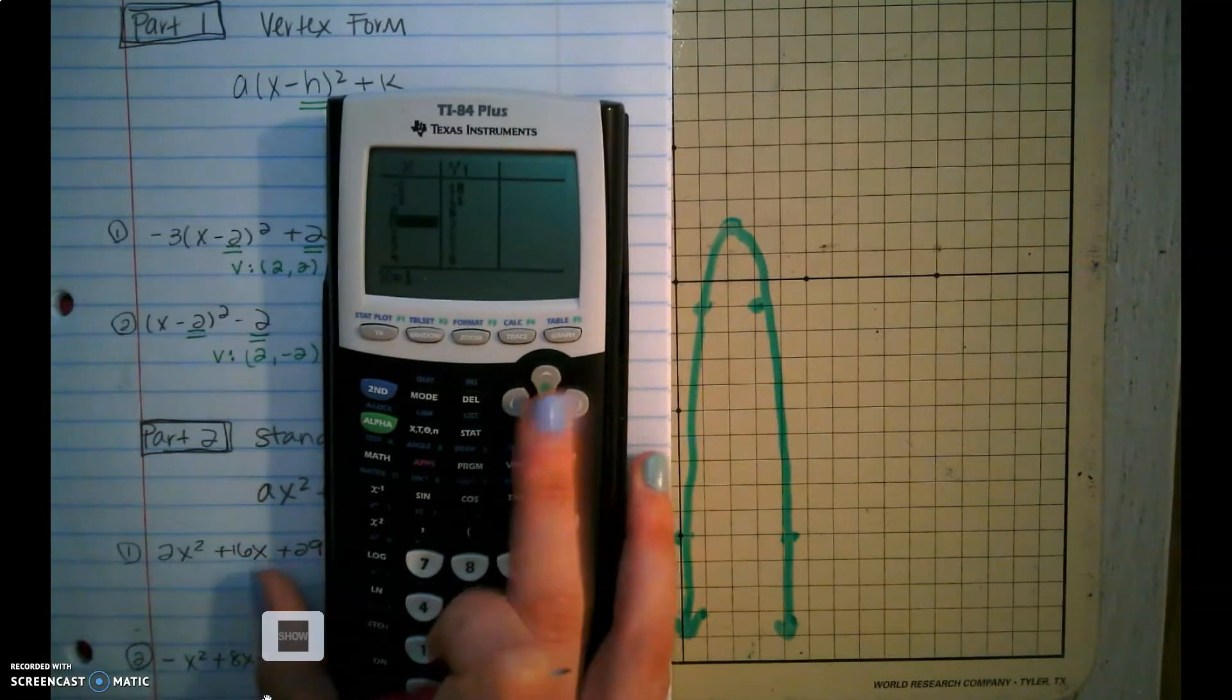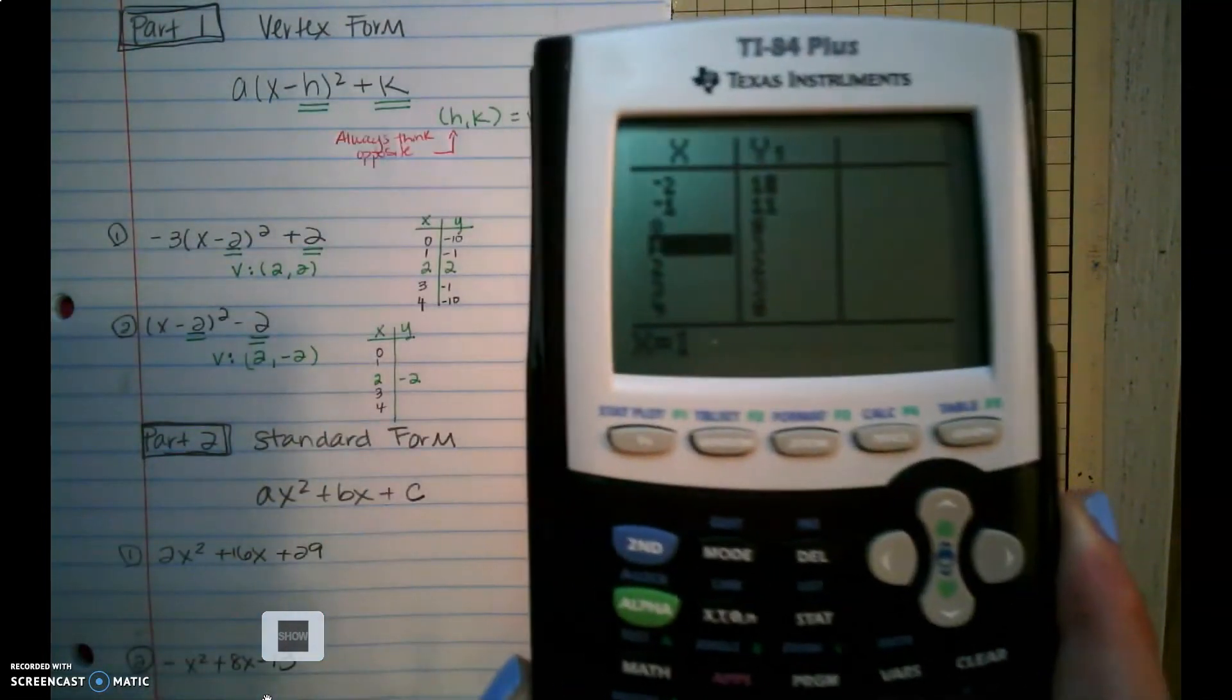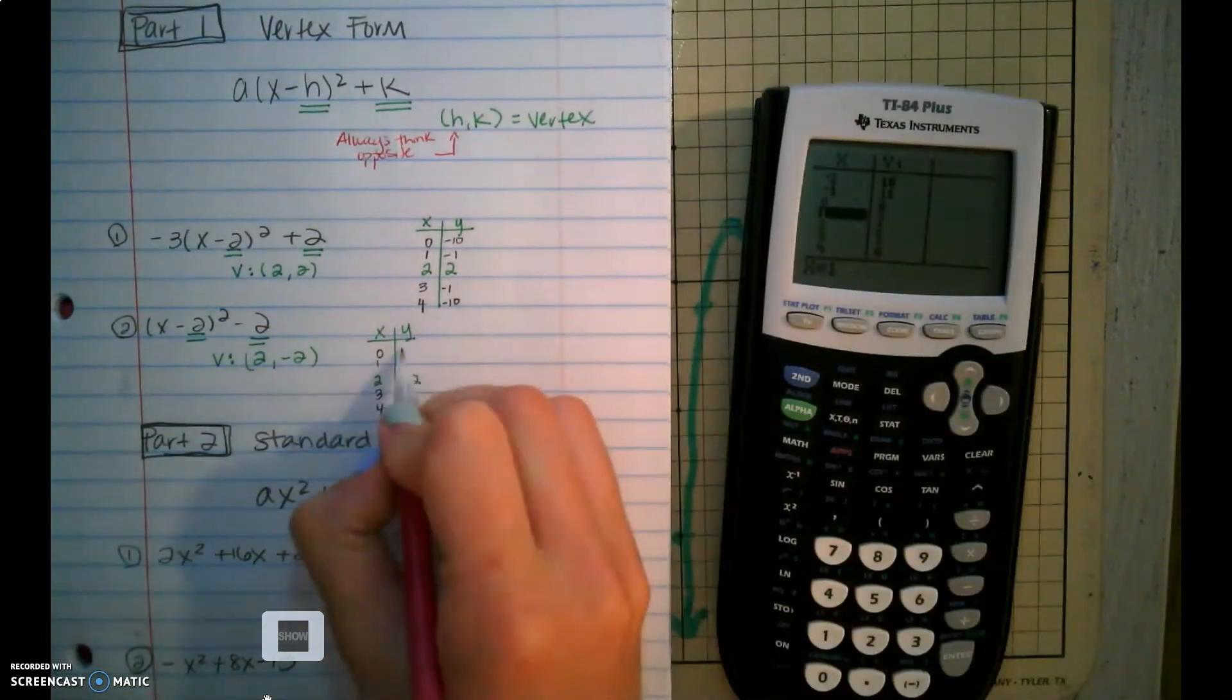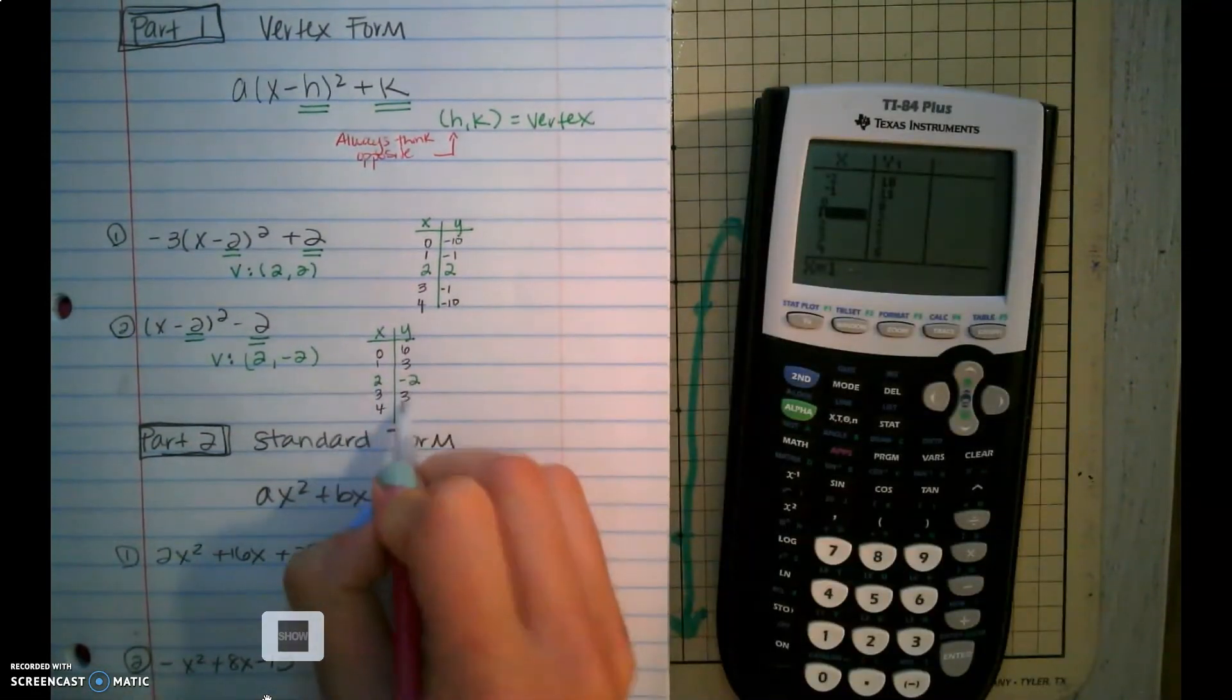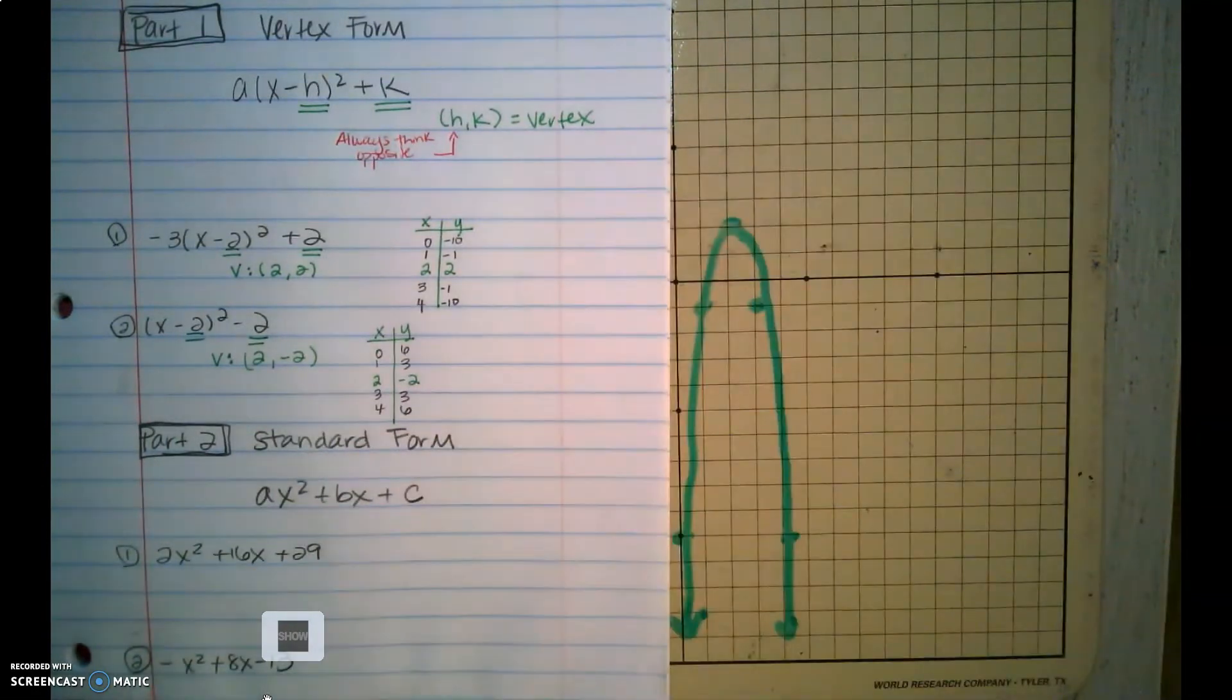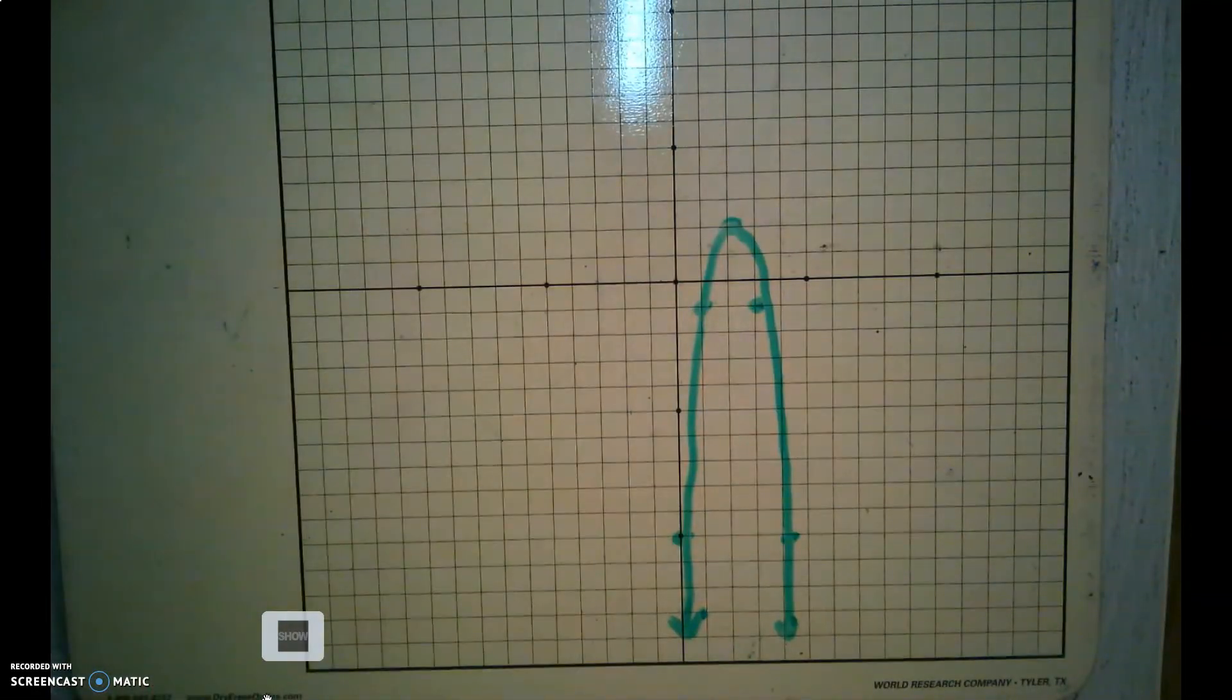So we have the values 0, 6 and 1, 3 and 2, 2 and 3, 3 and 4, 6. And I'm going to plot those points. I'm going to erase what we have here.